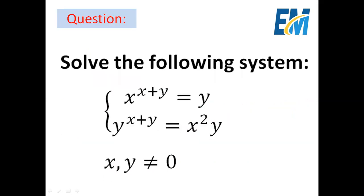Hi, everyone. Today we will solve the following system of two equations with the two unknowns x and y: x to the power x plus y equals y, and y to the power x plus y equals x squared times y. Here x and y are real numbers different from zero.